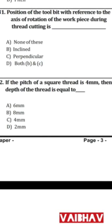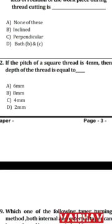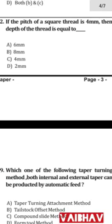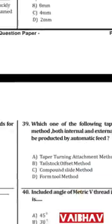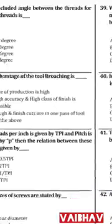Question 32: If the pitch of a square thread is 4 mm, then the depth of thread is equal to — pitch divided by 2 equals 2 mm. The answer is D — 2 mm.